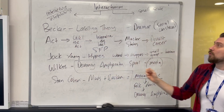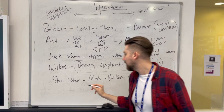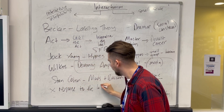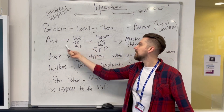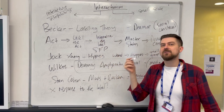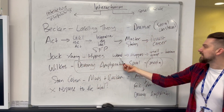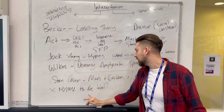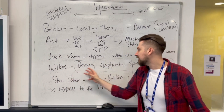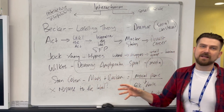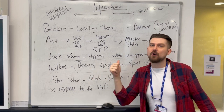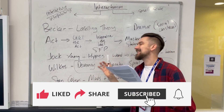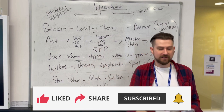This has been a whistle-stop tour of interactionism, but there are problems. The principal problem is: what is everybody's response to the label? Not every kid labeled 'naughty' in school internalizes that and becomes naughty. In Jock Young's study, some of the larger group dropped out before moving to heroin — they responded differently to the label. In Stan Cohen's mods and rockers, not every one of them was violent or went to the beach to fight. People can reject the label — they are not stuck behaving as the label dictates.